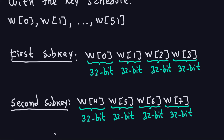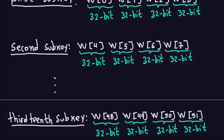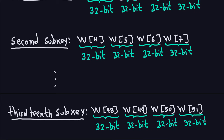You continue like that. Because we have 52 blocks, the last subkey — the 13th subkey, since the 192-bit key length produces 13 subkeys — will be the last four blocks of W: W48, W49, W50, and W51, giving another 128-bit subkey. That's how you produce the actual subkeys for the 192-bit original key length for the Advanced Encryption Standard.